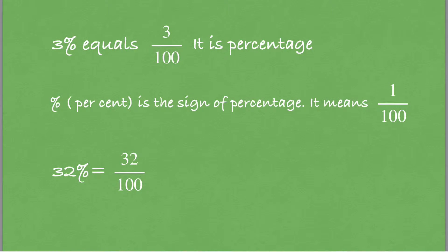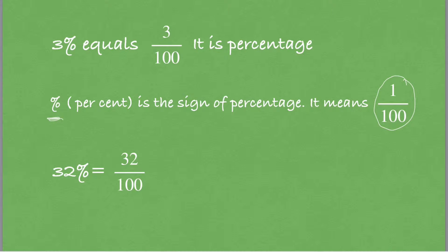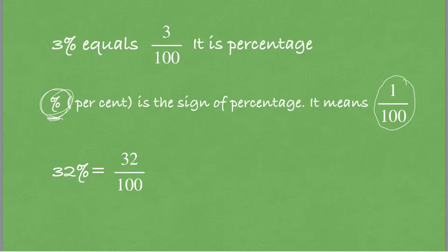The percent sign (%) stands for 1 out of 100. So instead of writing the percent sign, we can write 1 out of 100. For example, 32% means 32 out of 100.